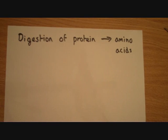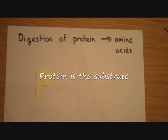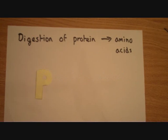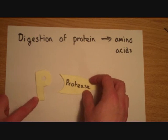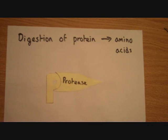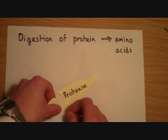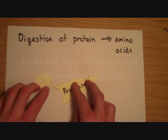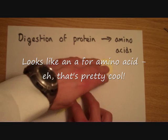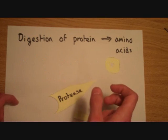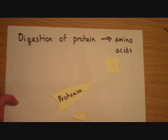Here are some neat ways of remembering which enzyme does what. Protein, as shown by the letter P, is digested by protease. Now the protein fits neatly into the protease active site, and the protein is digested into what looks like an amino acid. An amino acid is a small molecule which makes up the protein.